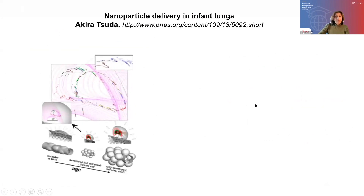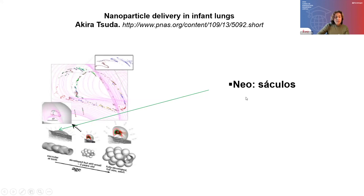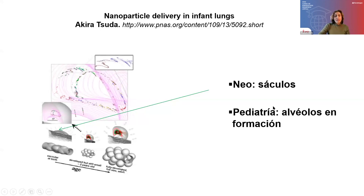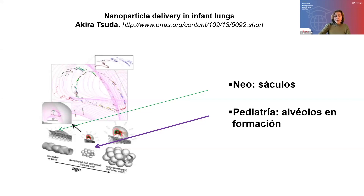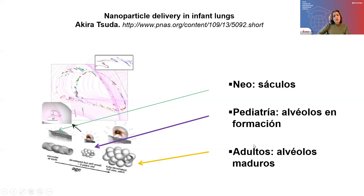Para realizar este intercambio gaseoso, no es lo mismo en la etapa neonatal, donde los neonatos respiran a través de sáculos y los alveolos no están totalmente diferenciados. A medida que crece el paciente hacia la edad pediátrica o lactante, los alveolos se van conformando en tamaño y número. Sin embargo, realizan su diferenciación total luego de los tres años, alcanzando el patrón adulto con el alveolo bien formado después de la adolescencia.